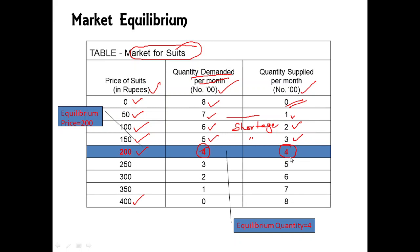Somehow, if the price changes — maybe due to demand or supply factors, or producers willing to earn more — and price rises above 200, quantity supplied increases to 5 while demand falls to 3. Now there is a surplus in the market. The influx of sellers increases supply further, and as price goes higher — 250, 300, 350 — demand keeps falling, eventually reaching zero, while supply rises to 800.